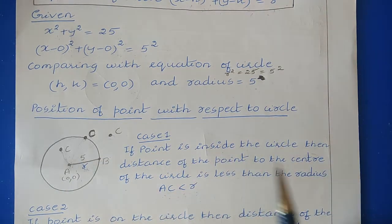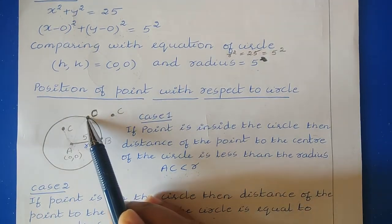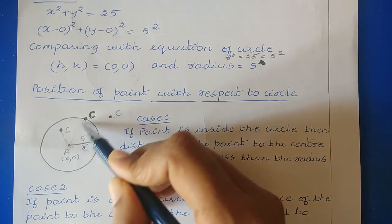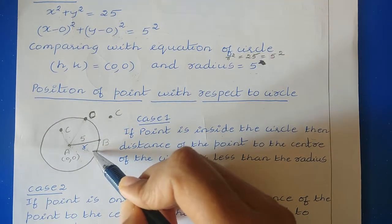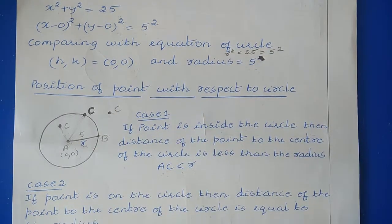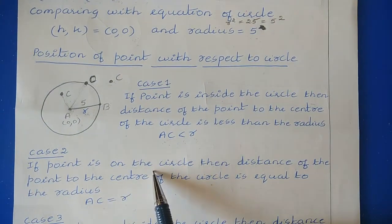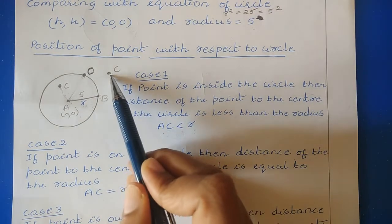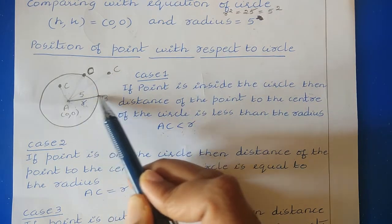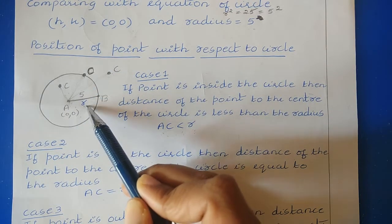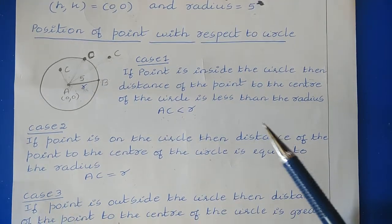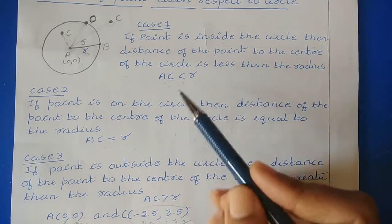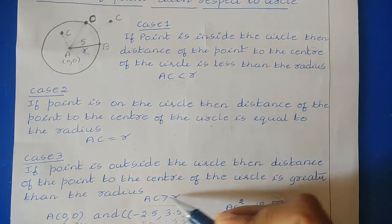In the second case, if the point is on the circle, then AC equals r — the distance equals the radius. In the third case, if the point is outside the circle, then AC is greater than r — the radius is less than the distance of the point from the center.